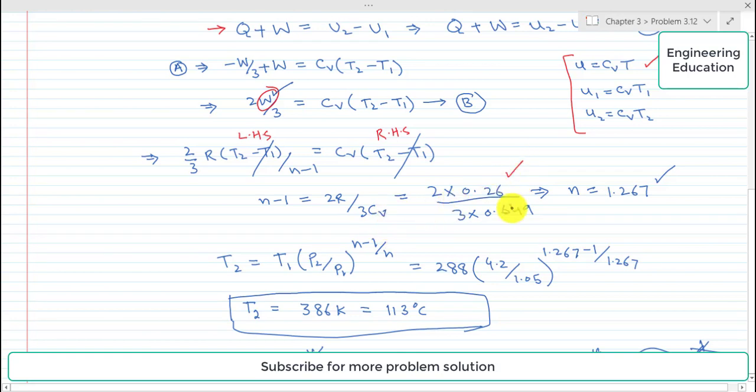The value of n comes out 1.267. This is called polytropic index.